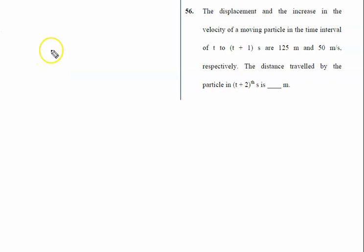The displacement and the increase in the velocity of a moving particle in the time interval of t to (t+1) seconds: displacement is 125 meters and increase in velocity is 50 m/s. The initial velocity is u, final velocity is u+50. Find the distance traveled by the particle in (t+2) seconds.